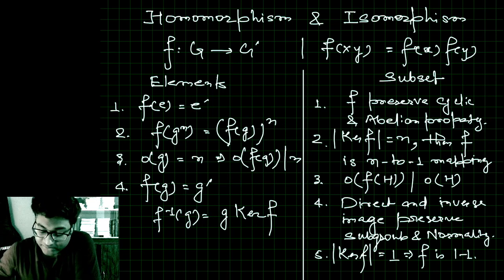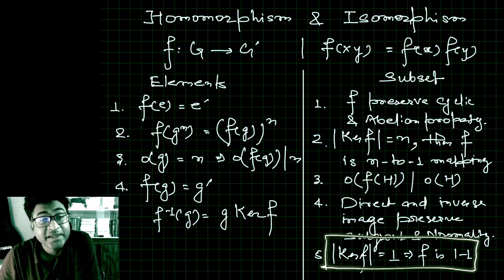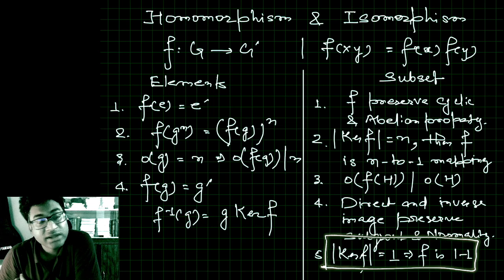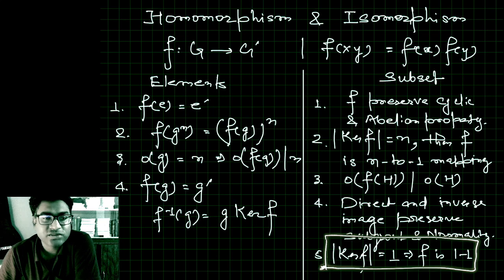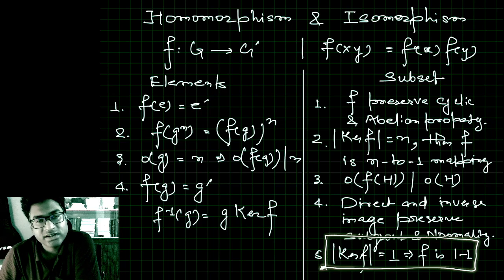The last result is very important: if the cardinality of the kernel of f is 1 — that is, the kernel contains only one element — then the function f is one-to-one. This is very useful and will help you determine whether a given function is an injective or bijective homomorphism, that is, an isomorphism.